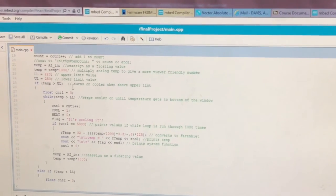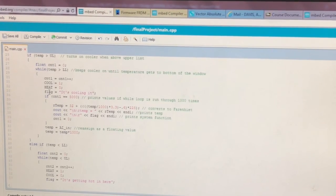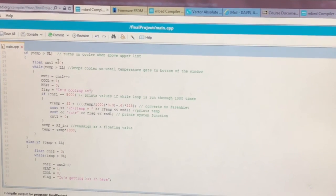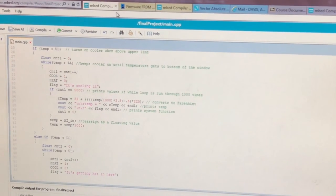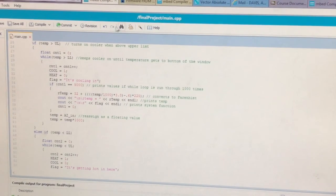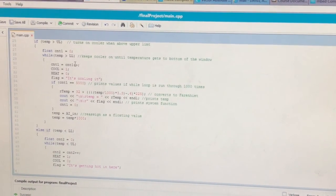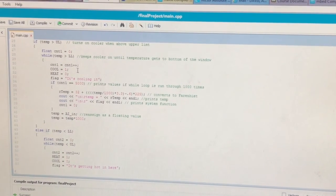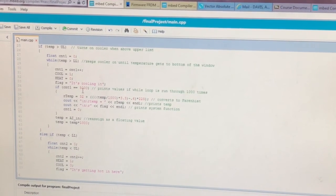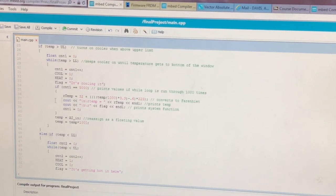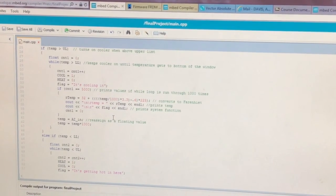We then go into an if statement to turn on the cooler if the upper limit is surpassed by the temperature. Within that if statement for turning on the cooler we have a while loop so that the relay will not flicker on and off when it is within a close range of that upper limit. We bring the temperature all the way down to the lower limit to alleviate this issue. Within this while loop we turn the cooler on and we set the flag to its cooling. Next we have an if statement that counts this while loop for every 5,000 times it prints out data and after that we reset the temperature values so that the while loop can be run through again in real time with the temperature.